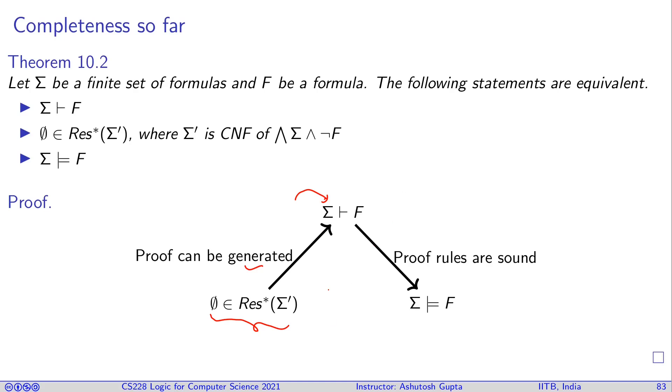In the last theorem, we established that if I have a f, sigma implies f, then I have guaranteed to derive empty clause in the resolution proof system starting from sigma prime. So, you complete this circle. Okay, these three ideas are equivalent.